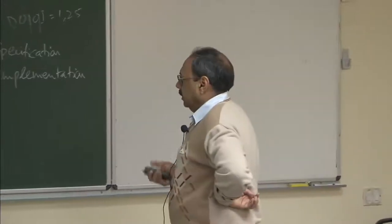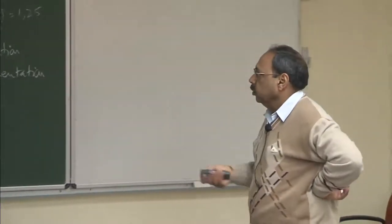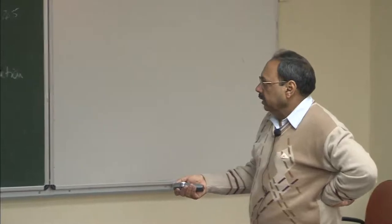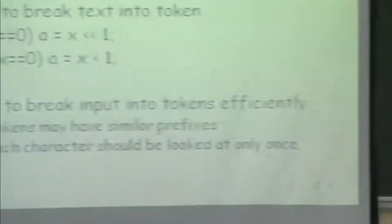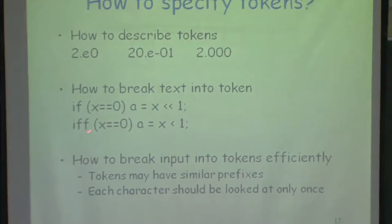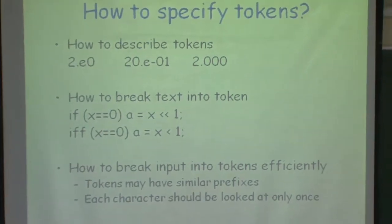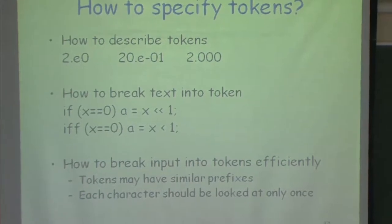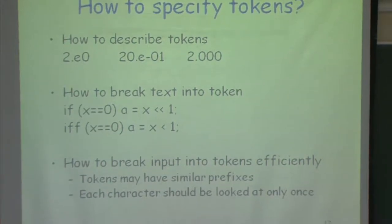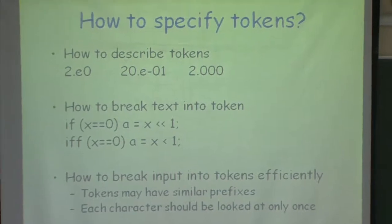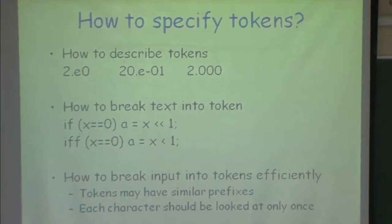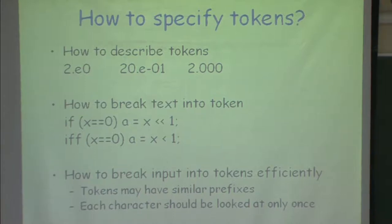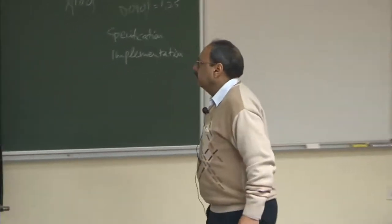Let us keep on discussing these issues: how do we break input into tokens efficiently? One issue is that tokens may have similar prefixes — we have to be aware of this and we actually want to look at each character only once. The idea of pushing characters back into the input stream and moving the pointer is an overhead. Once I have taken a character into the buffer, I want to handle it very efficiently.